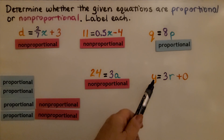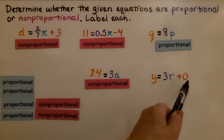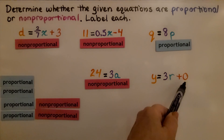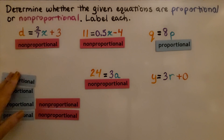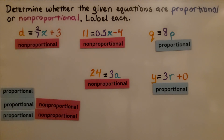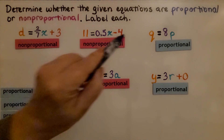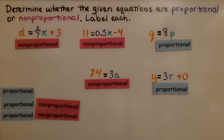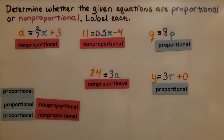Now look at this one: y equals 3r plus zero. We've got our plus zero and two variables — that is a proportional relationship. These equations can be written in the form y equals mx plus b but may use different variable names. Instead of y and x, you might see d, or q and p, or y and r. That's okay — it's still in the form y equals mx plus b.